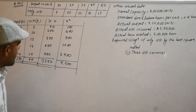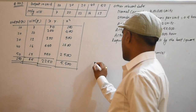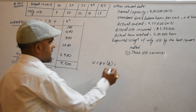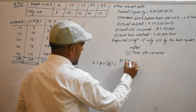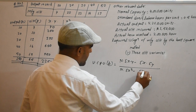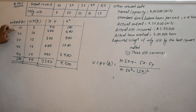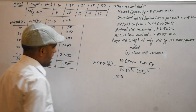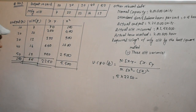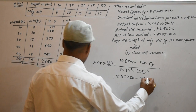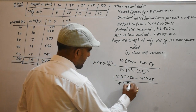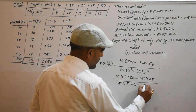Now we can use the variable cost per unit formula: b equals n times summation of x·y minus summation of x times summation of y, upon n times summation of x squared minus summation of x whole squared. Here n equals 5 (total data points 1, 2, 3, 4, 5). So: 5 times 2250 minus 150 times 65, divided by 5 times 5500 minus 150 squared.